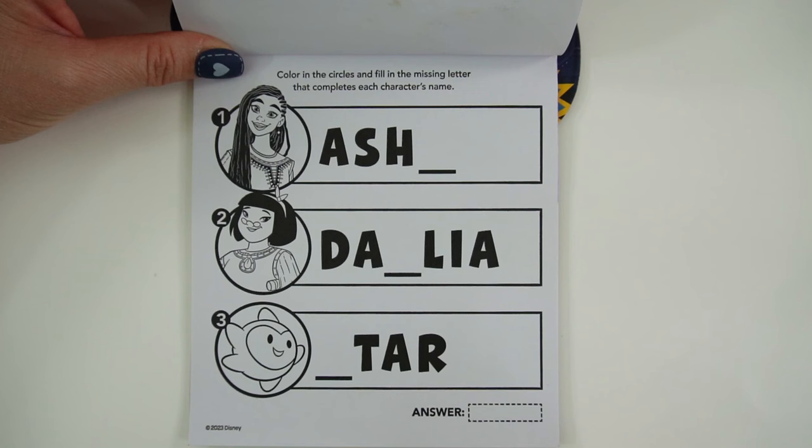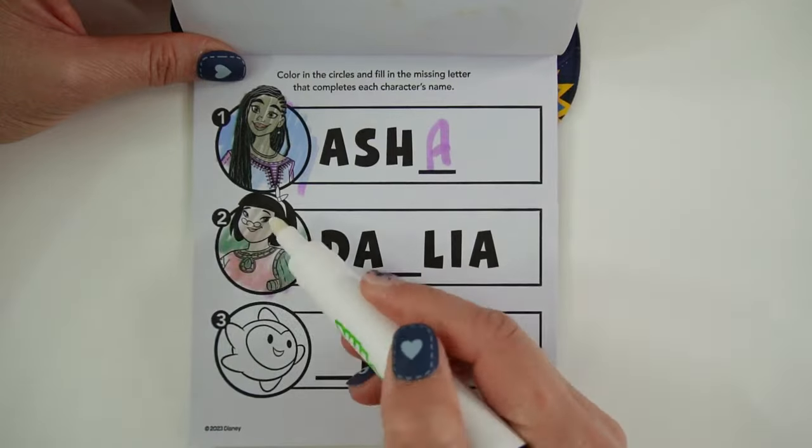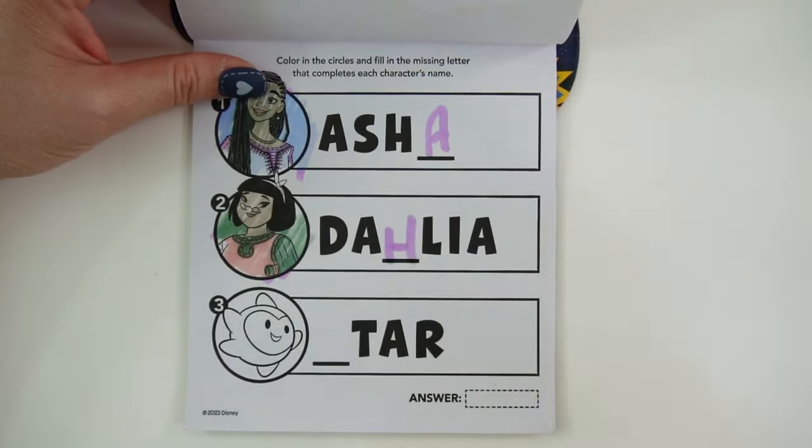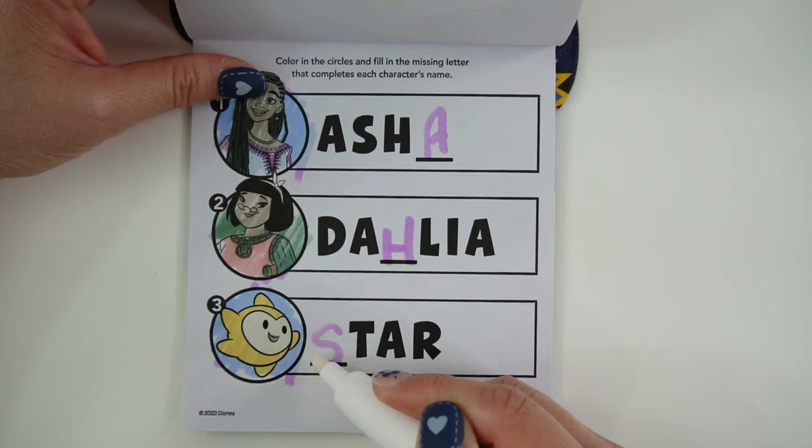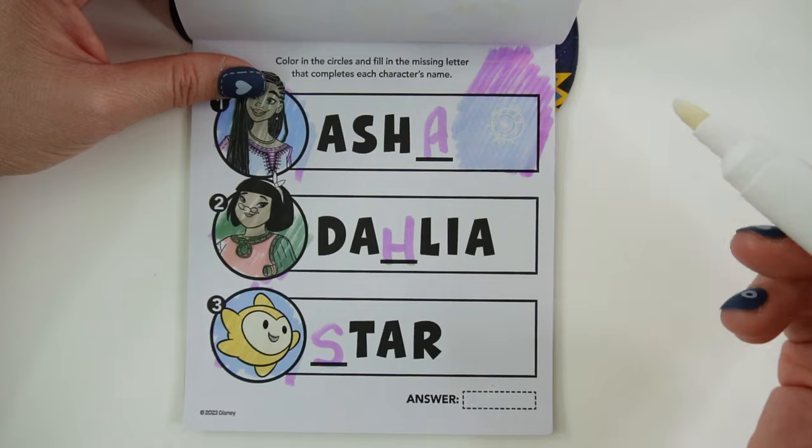Color in the circles and fill in the missing letter that completes each character's name. This is Asha. This is Dahlia. And Star. Let's look for the wish. Here it is.